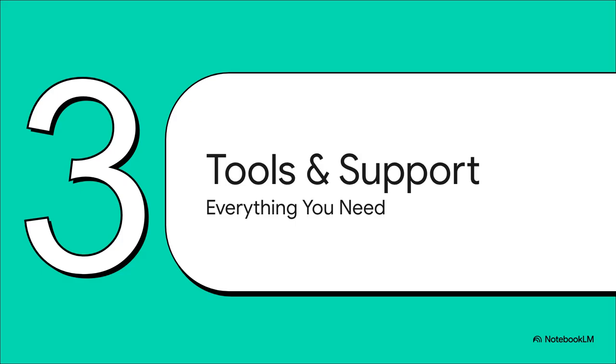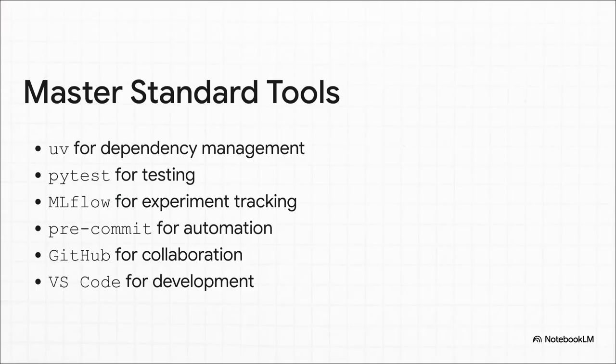So let's take a look at what the course provides to make sure you actually succeed. You're going to get your hands dirty with powerful, open-source tools that professionals use every single day. We're talking UV for dependency management that's ridiculously fast. You'll master PyTest for rock-solid testing so you can actually trust your code. You'll track everything with MLflow and automate all your quality checks with pre-commit hooks. These are the tools that let you build like a pro.